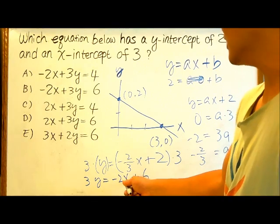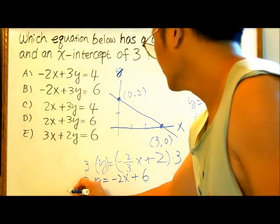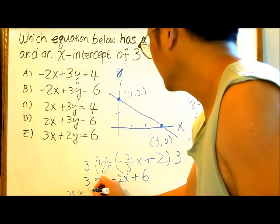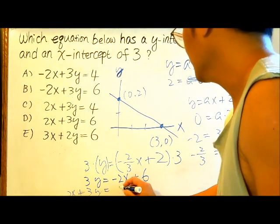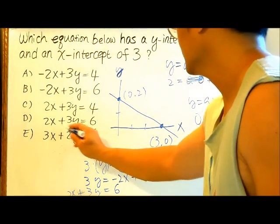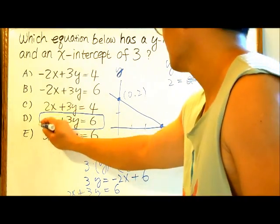Now if we add 2x on both sides, 2x plus 3y equals 6. Then we notice that's the answer right here, answer choice E.